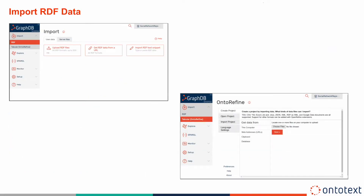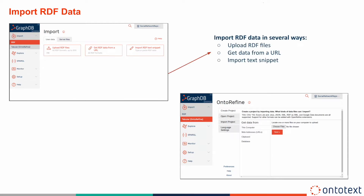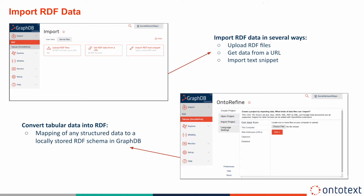Here you can see the options provided by the import menu. It allows you to import data in different serialization formats through uploading RDF data from local files, from files on the server where the Workbench is located, from a remote URL, or by pasting the RDF data in the text area tab.